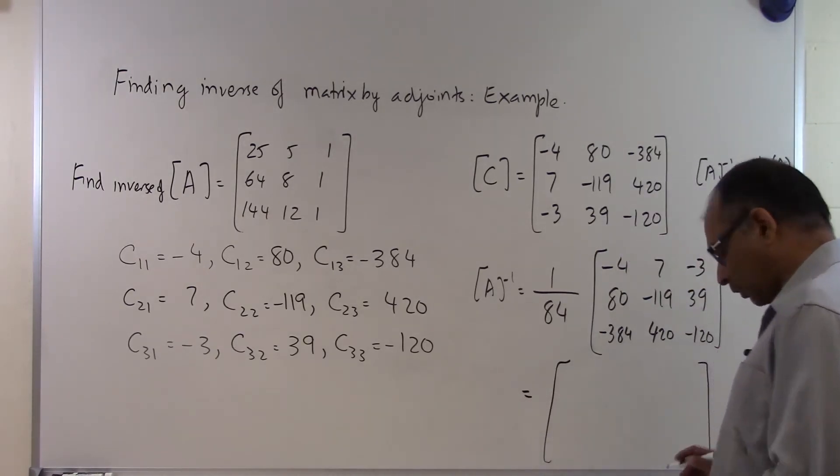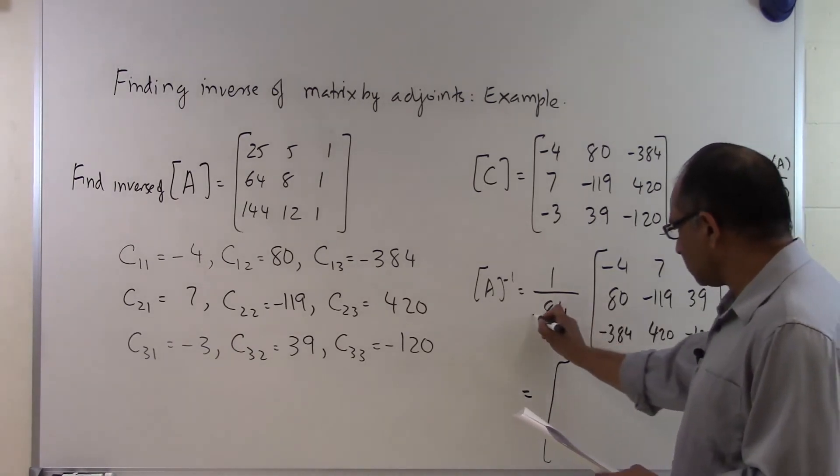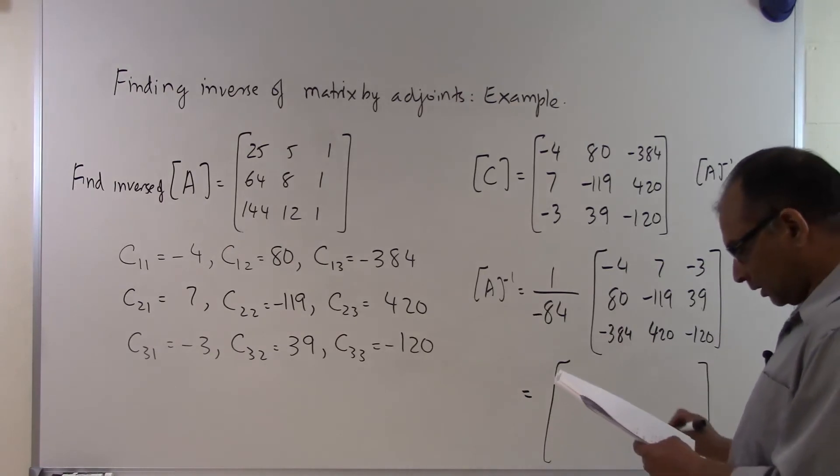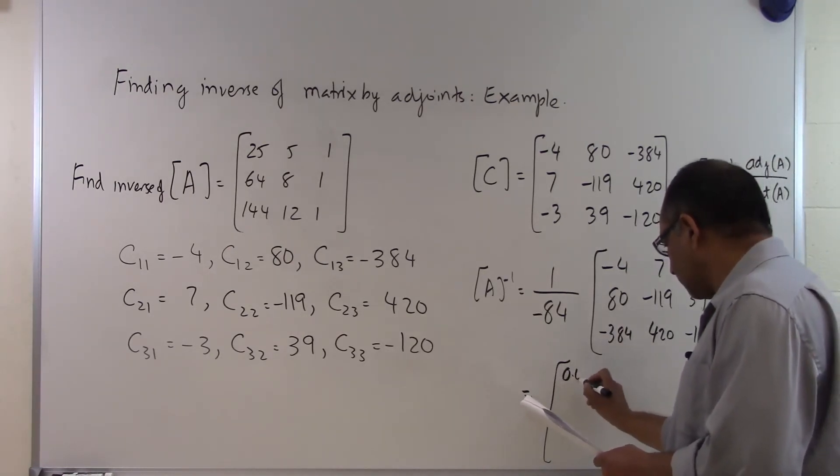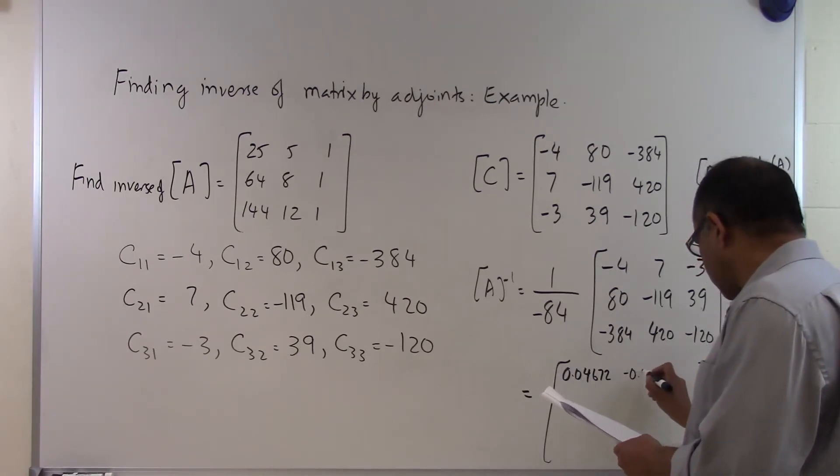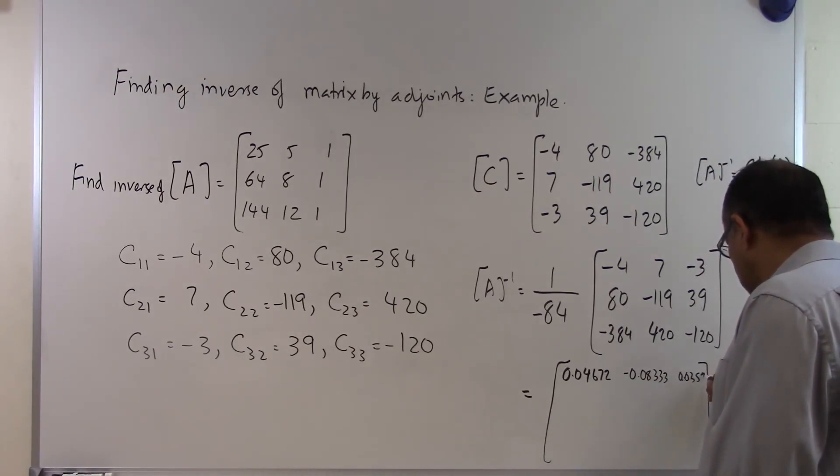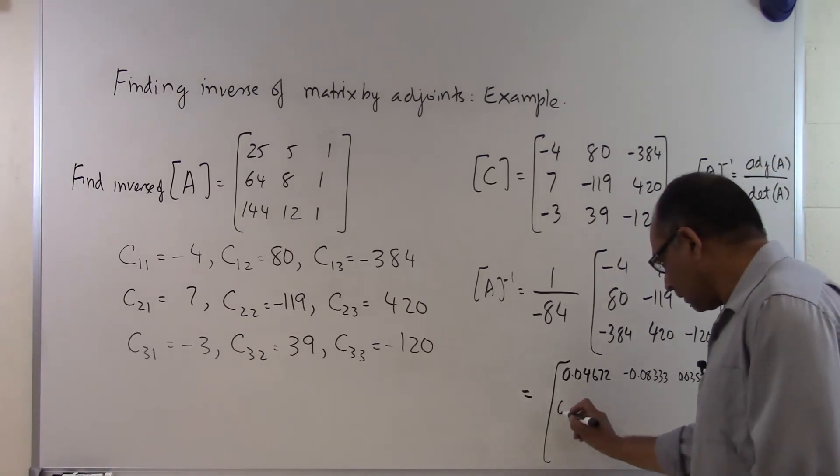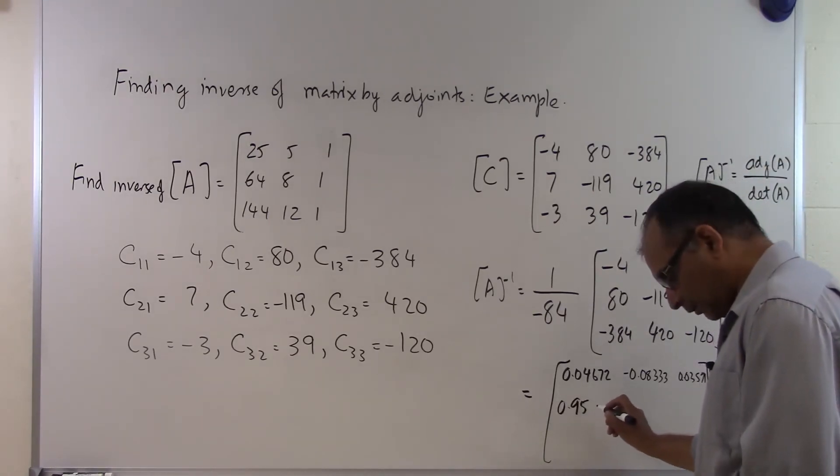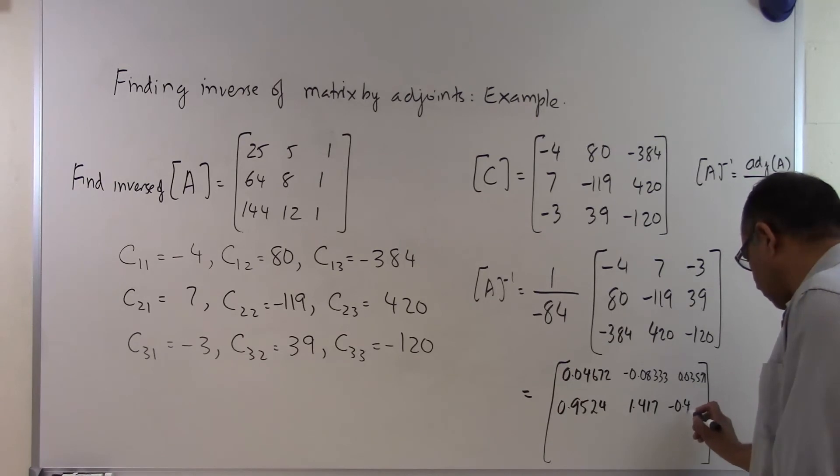If I do this division, I'll be able to find out what the inverse of the matrix is. The determinant of the matrix is minus 84. And it turns out to be 0.04672, minus 0.08333, 0.03571, 0.9524, 1.417, minus 0.4643, and so on.